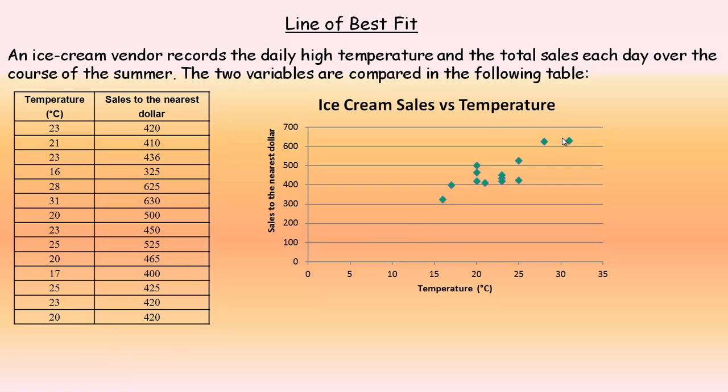So first of all, this is what not to do—this is a poor line of best fit. It doesn't follow the general trend. The way this line of best fit is drawn, there are several points that are a fair distance away from the line, so that's a really poor line of best fit.